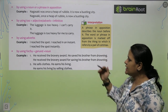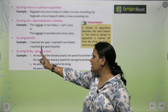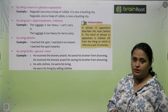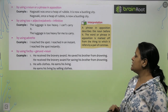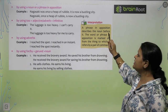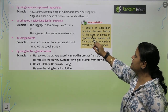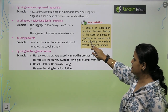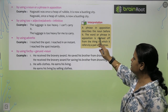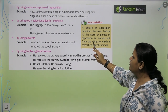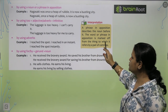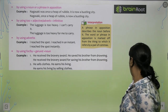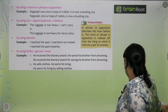So, for ka use kar sakte hain, or by plus gerund plus noun. A phrase in apposition describes the noun before it. The word or phrase in apposition is marked off from the thing to which it refers by a pair of commas.